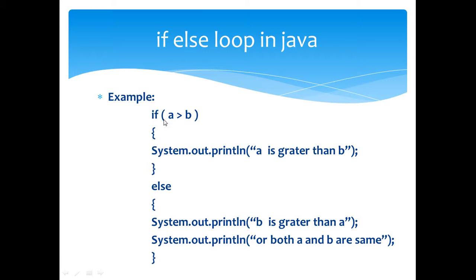Here is an example for the if-else loop. If a is greater than b, then it will print 'a is greater than b'. Otherwise there are two chances: b is greater than a, or both a and b are the same.